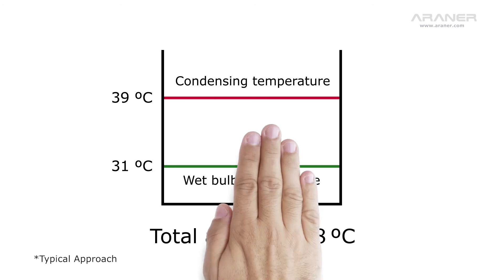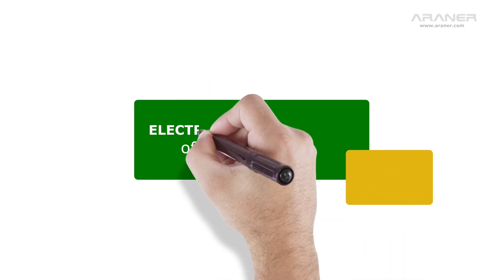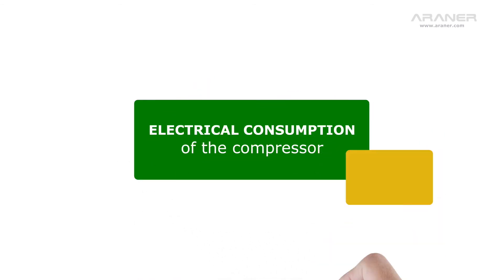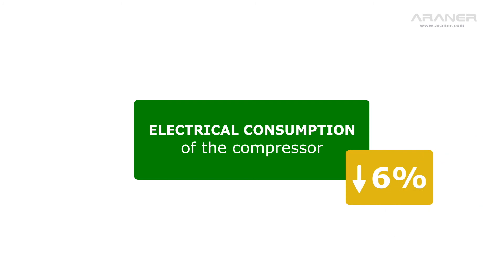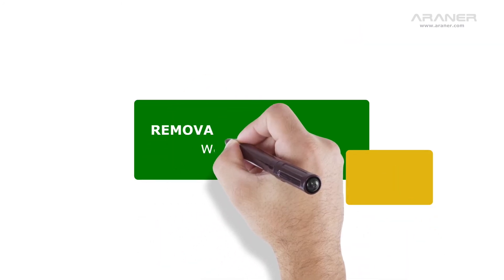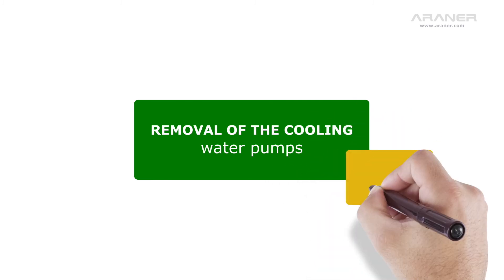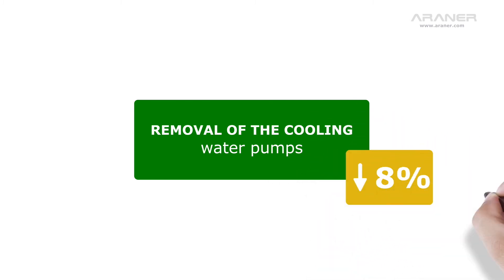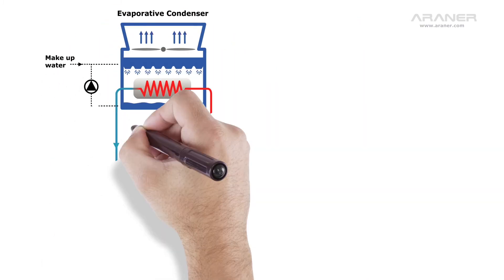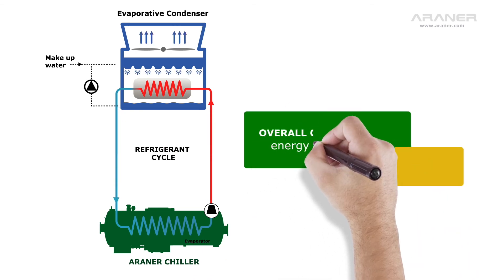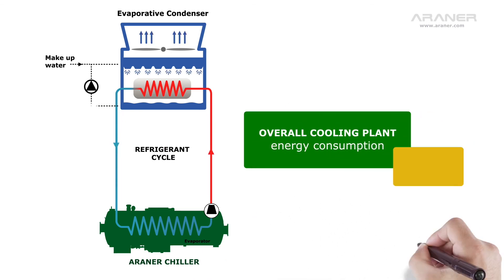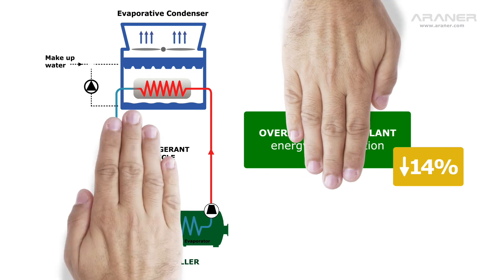By condensing at a lower temperature, we reduce the electrical consumption of the compressor by 6%, and an additional 8% from the deletion of the cooling water pumps, allowing us to decrease by 14% the overall cooling plant energy consumption.